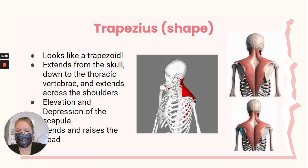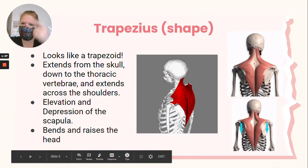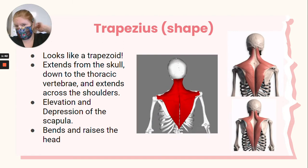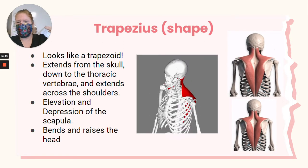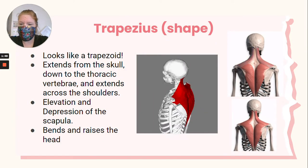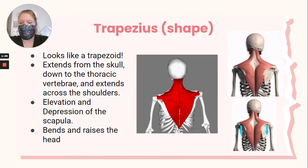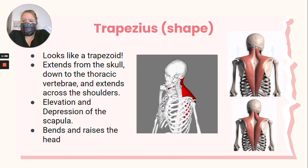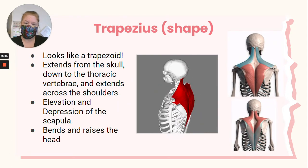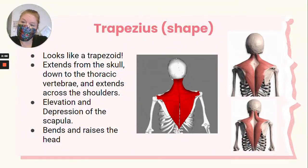So we have the trapezius. It looks like a trapezoid — I wonder where it got its name. It extends from the skull, attached to the base of the skull, down the thoracic vertebrae, spanning where all of those ribs are attached, and extends across the shoulders, making that beautiful trapezoid shape. It is responsible for elevation and depression of the scapula, and it also helps to bend and raise your head. So the trapezius is named according to its shape.